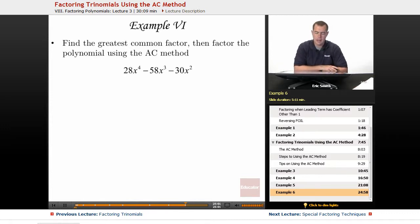Alright, let's do one last example. I definitely wanted to do one where they had a greatest common factor that you could pull out. Notice how initially these numbers are quite large. You got 28, 58, and a negative 30.